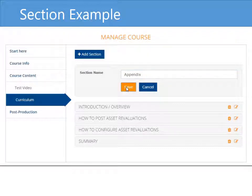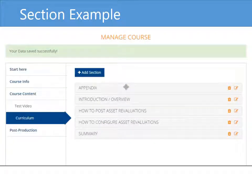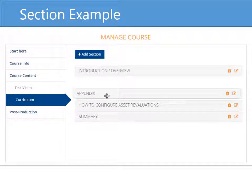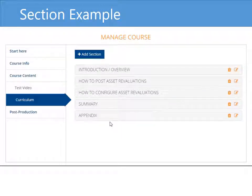I'll name it Appendix and save this, because I plan to add some PDF handouts that I want to upload. Notice that the appendix is at the beginning now — that's not where I want it. So I can just drag it all the way down to where I want that section to be. And that's it. So the next step is to create the actual lessons and upload those. I just wanted to show you how to create these sections. Once you have these sections in place, you can move on to create the actual lessons.